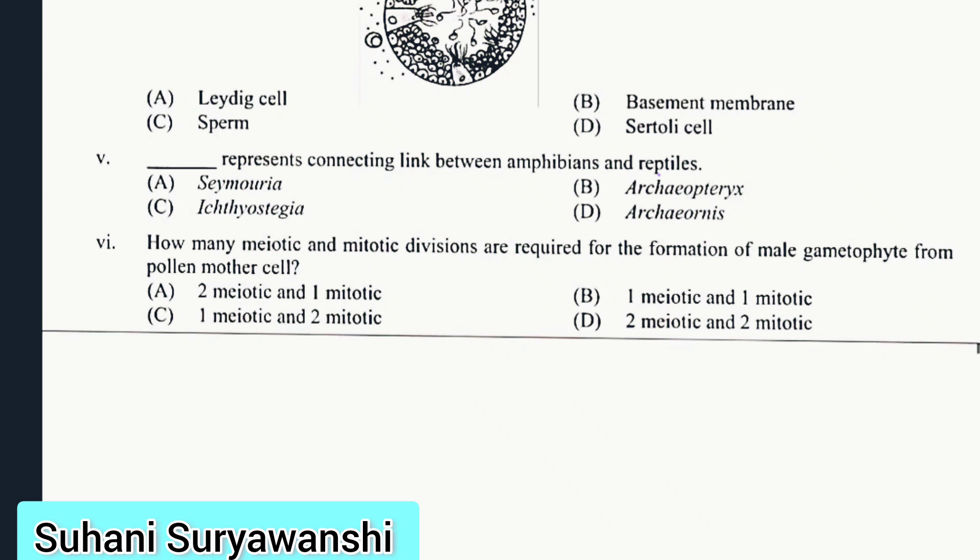Question 5: Blank represents connecting link between amphibians and reptiles. The correct answer is Seymour. Question 6: How many meiotic and mitotic divisions are required for the formation of male gametophyte from pollen mother cell? The correct answer is one meiotic and two mitotic divisions.